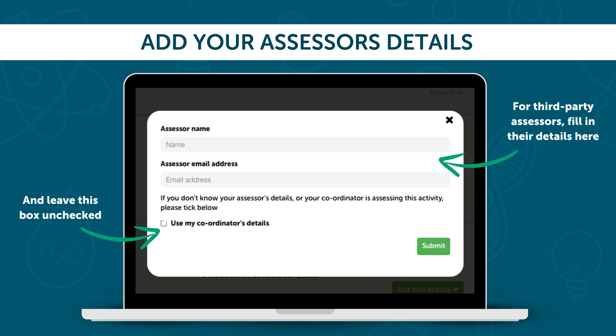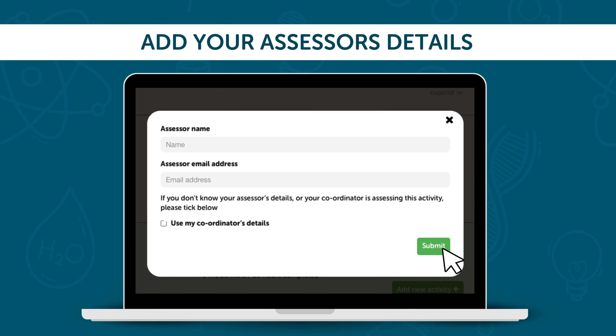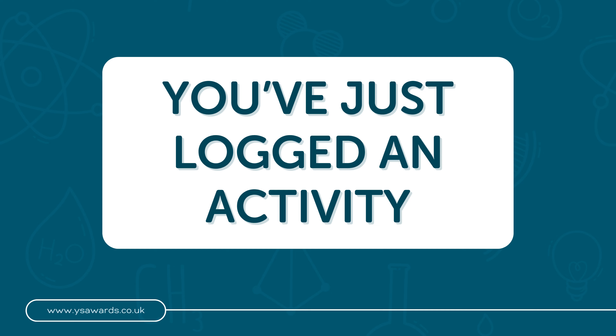If you've taken part in an activity with a third party, for example a work placement, you have the option to provide their details so they can also assess your activity. Be sure to ask permission to share their details and let them know to look out for an email from Youth STEM Award. Once you're finished, press Submit.